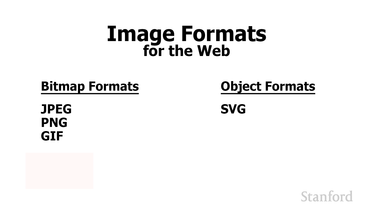SVG is a great choice if the particular image you're working with will fit into the object format. We also talked about how, for a lot of uses, the bitmap format is a much better choice. In particular, if we've got something like a photograph, the object/vector format is not going to work, and so we would want to use a bitmap format. There is an older object format called Flash, used primarily for advertising and web games, but it's been on its way out for quite a while, and I expect it will be replaced completely by SVG.